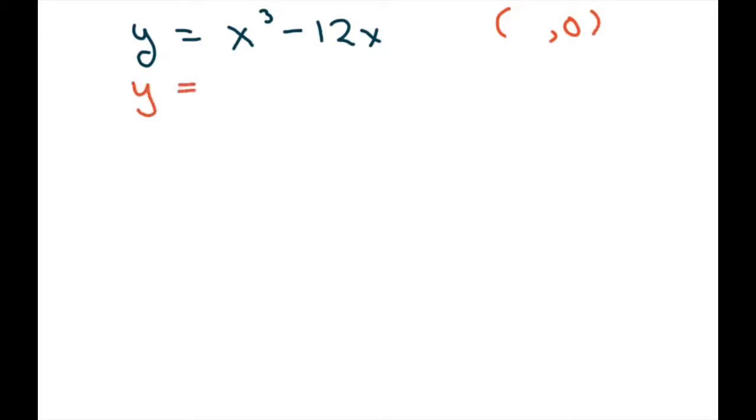So you set y to 0 to find your x-intercepts. So 0 equals, and I'm going to pull out an x, x squared minus 12. So when you factor this, you're going to get x minus square root of 12 times x plus square root of 12.